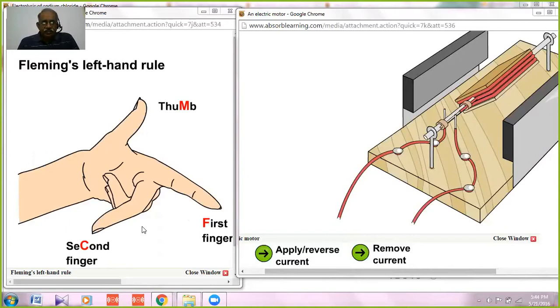Now, Fleming's left hand rule says that if a current carrying conductor is allowed to be in a magnetic field, it gets deflected and the motion depends on the direction of the current.